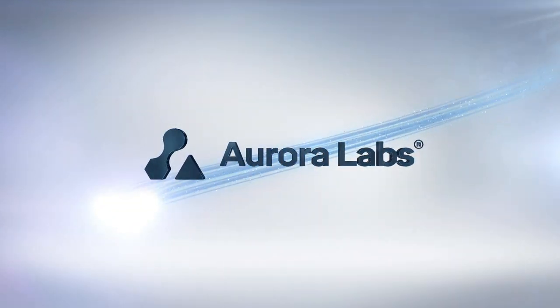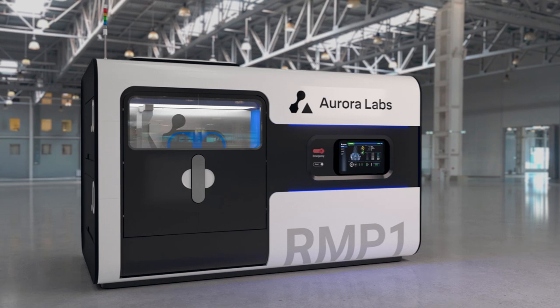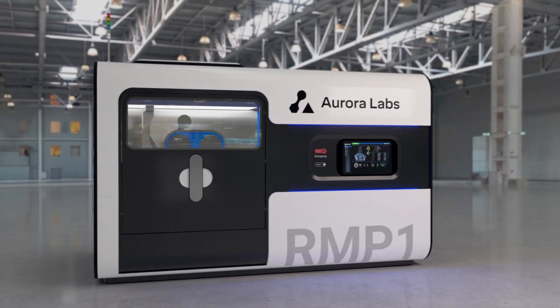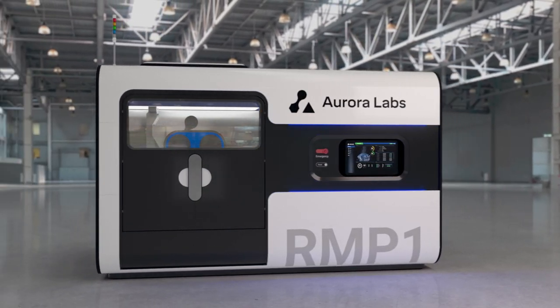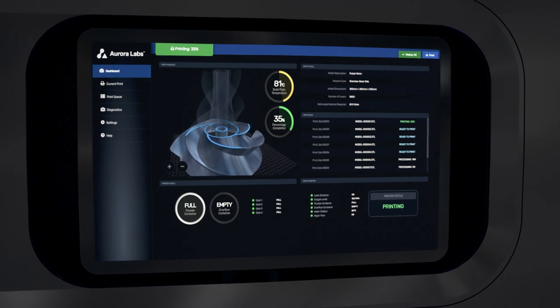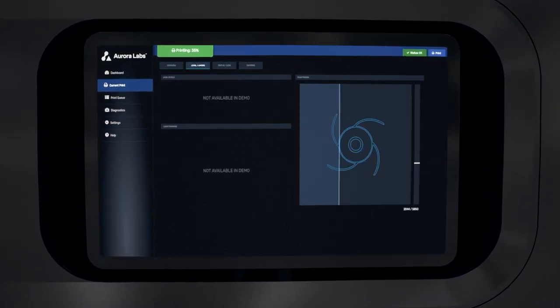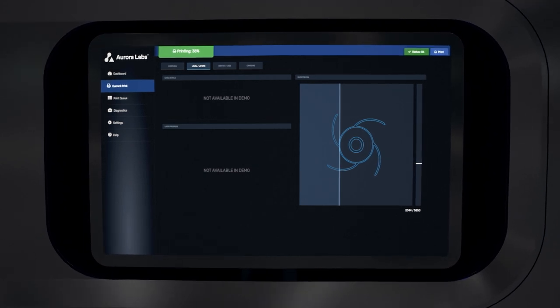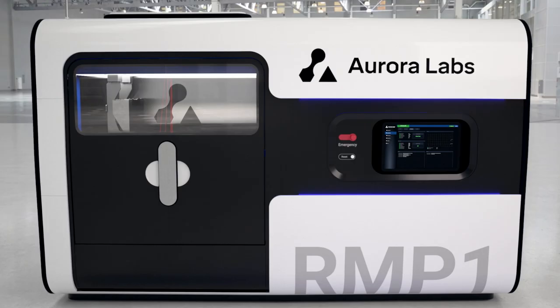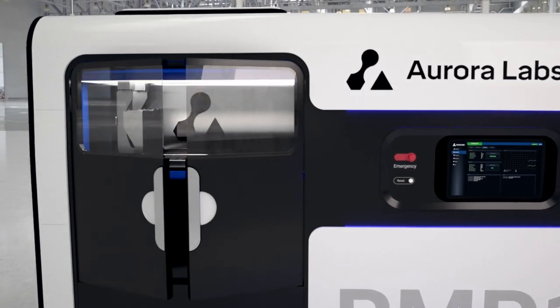Aurora Labs' groundbreaking multi-layer concurrent printing technology, or MCP for short, is a patent-pending process in development to drastically increase the speed of the powder bed fusion additive manufacturing process. Here we can see, in place of a standard single sweeper, a gantry comprised of sequential powder gates, each with a dedicated sweeper.